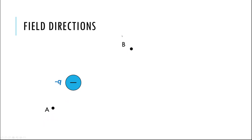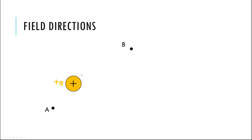Now let's try electric charges. If I have a negative charge — Q could be an electron or a negatively charged object — I look at points A and B and ask what's happening with the electric field there. A charge creates an electric field all around it. The rule is: the field shows which way a positive charge would get pushed. At point A, a positive charge would be attracted to the minus, so these field vectors look very similar to the gravitational case, pointing toward the negative charge.